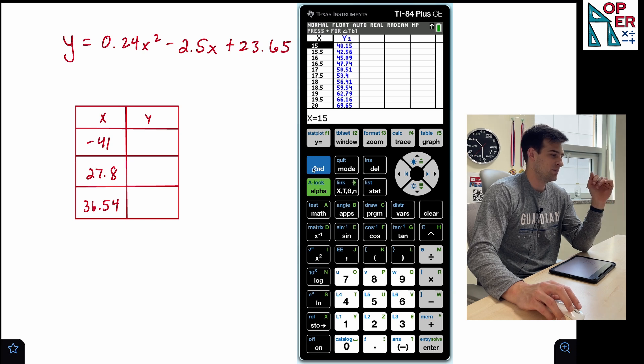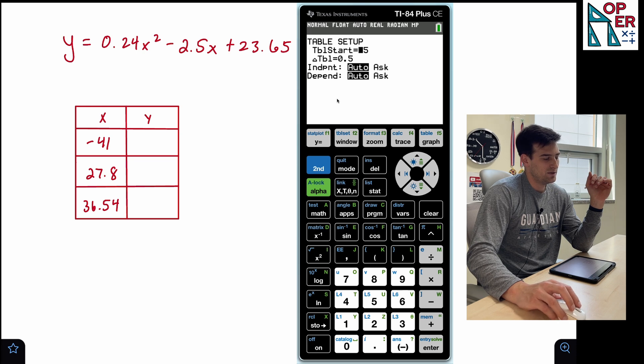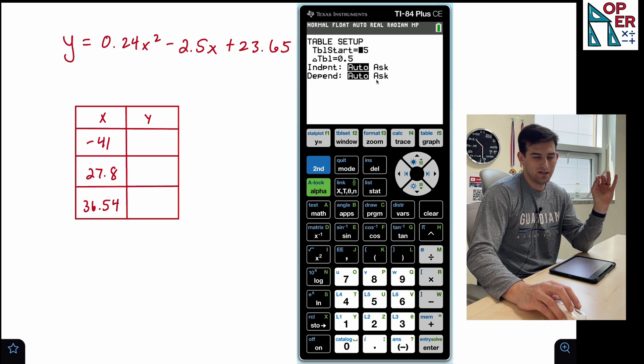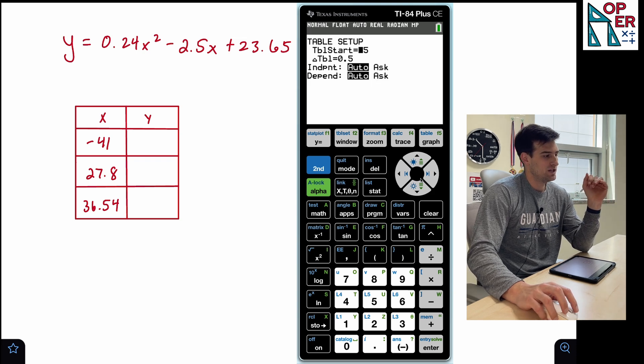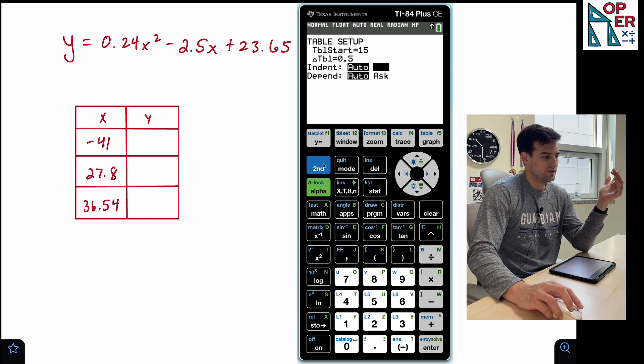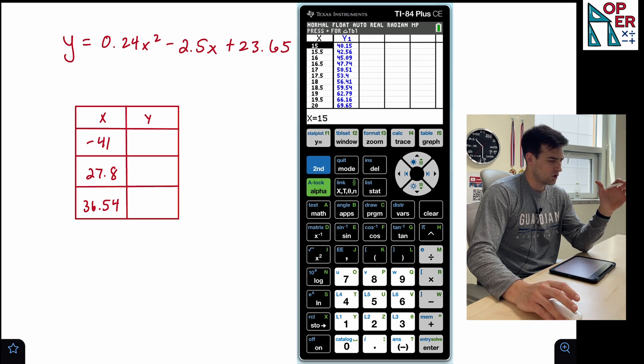Well, that's not the purpose of this video. The purpose of this video is to talk about these two features here: independent, dependent variable, auto versus ask. Now, the one thing that you would ever change is the independent because that's x and you would change this from auto to ask. So it's on auto. What auto does is it auto populates our table, right? So our x values are already there. Our y values are already there.